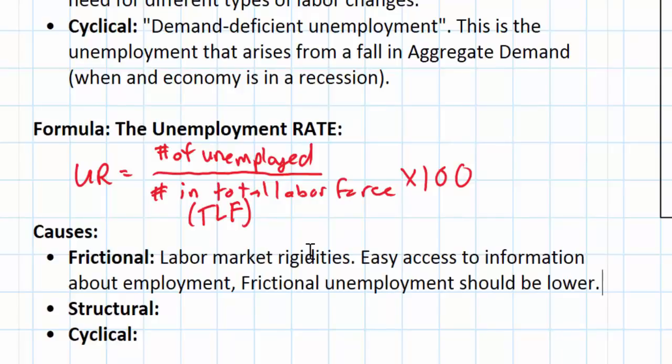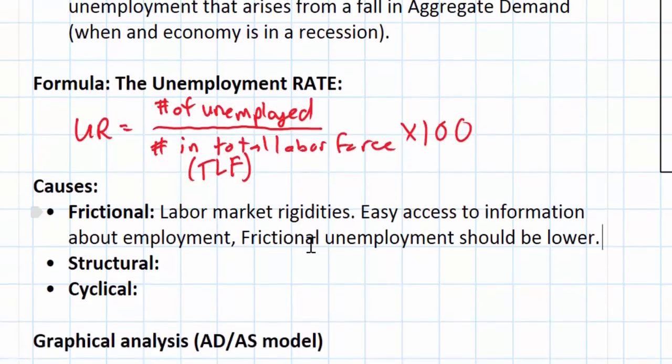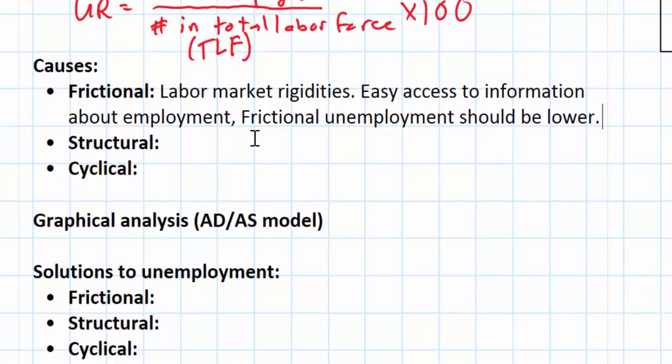If people are able to move around the country and move to different places where jobs exist, then frictional unemployment will be lower. However, if there are rigidities in the labor market or obstacles to people finding information about where jobs exist, or the ability to move to different places in the country in order to take those jobs, then we would expect frictional unemployment to be a little bit higher.